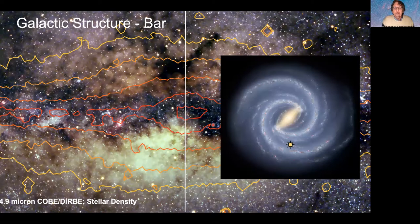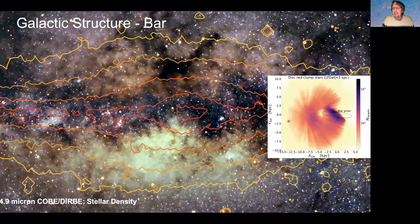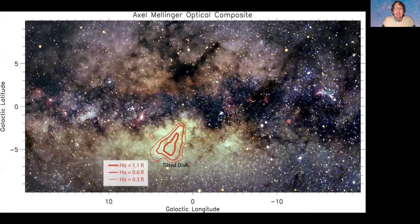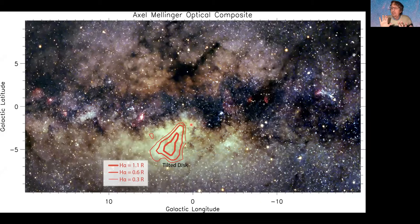The discovery I'm going to discuss is ionized gas detected in the direction of Baade's Window — a section of sky towards the galactic center where there's very little dust, providing a window to see into the center of the Milky Way. We've detected ionized gas there. We know it's at the center of the galaxy because we can measure its Doppler shift, which matches the known Doppler shifts of gas in the galactic center. We're seeing a tilted distribution of gas in the center.